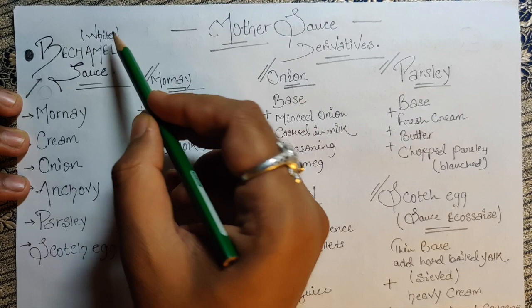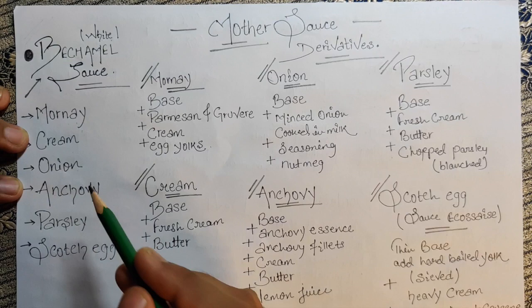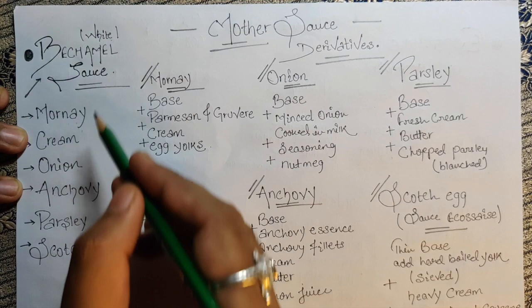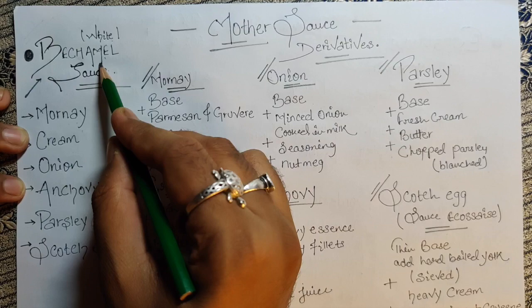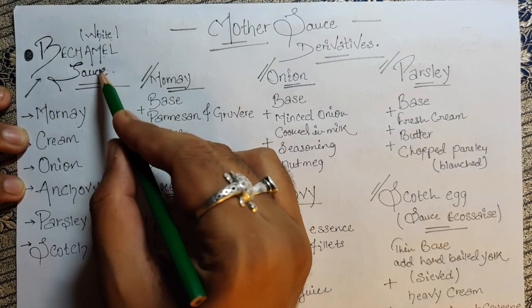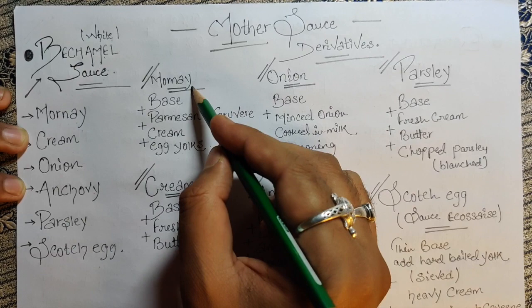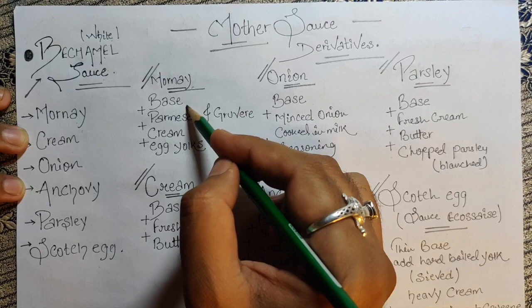The derivatives of béchamel sauce are: Mornay, Cream, Onion, Anchovy, Parsley, and Scotch egg sauce. The base means béchamel — we make the basic béchamel sauce first, and then we add additional ingredients to arrive at each derivative. The end result will be these different derivative sauces.